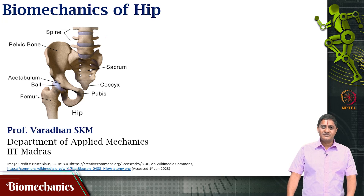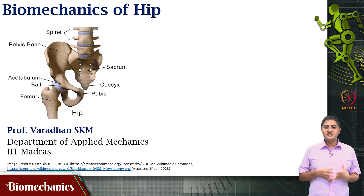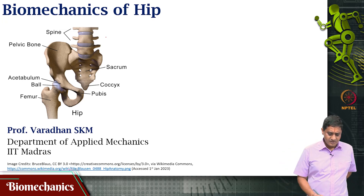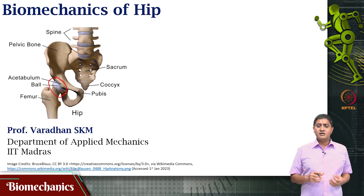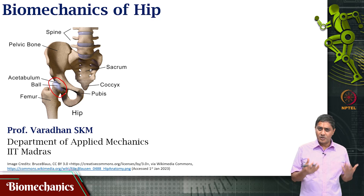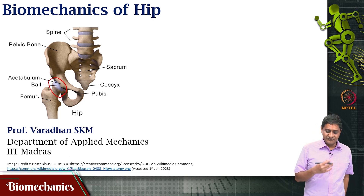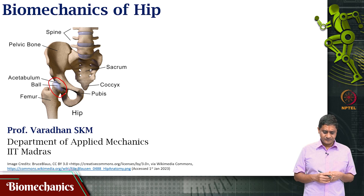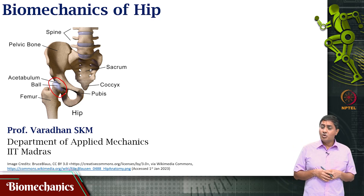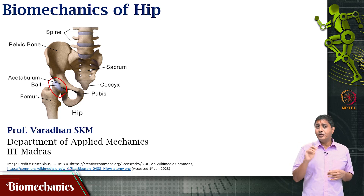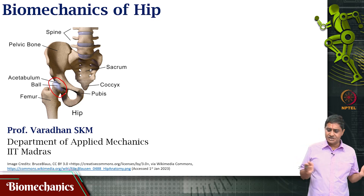Welcome to this video on biomechanics. We were discussing biomechanics of the hip — specifically today we discussed the anatomy of the hip joint and the movements that are possible in it. The hip joint is the articulation involving the acetabulum of the hip bone with the head of the femur, the only bone in the thigh. Its crucial function is weight bearing during dynamic activities such as walking, running, and jumping. Movements include flexion and extension, abduction and adduction, and internal and external rotation. This is what we saw in the previous class.